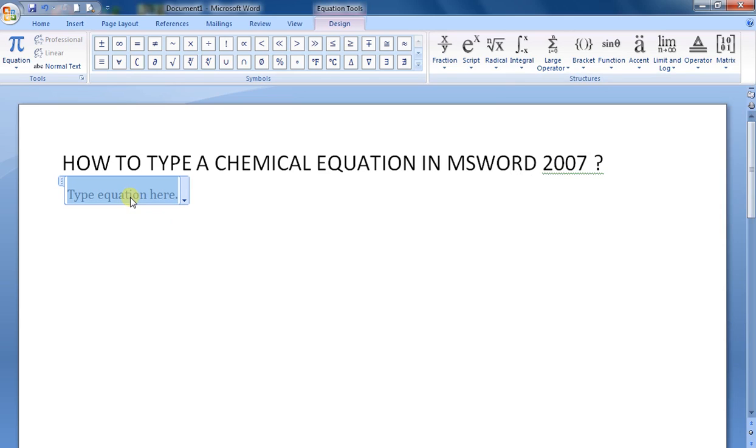Just type the equation here. For example, CH4. When you want to type the subscript, you type underscore followed by the number and press space bar.